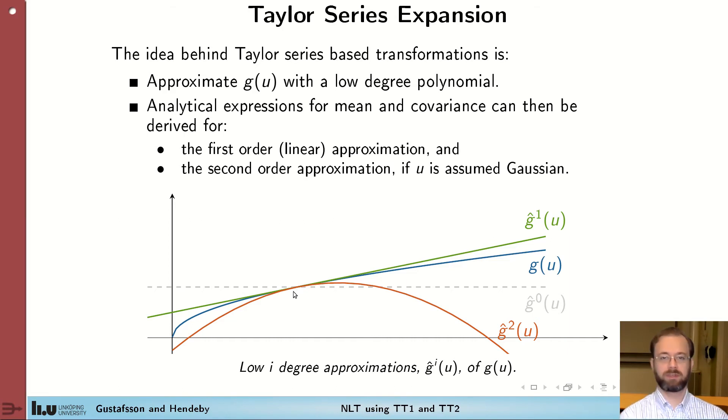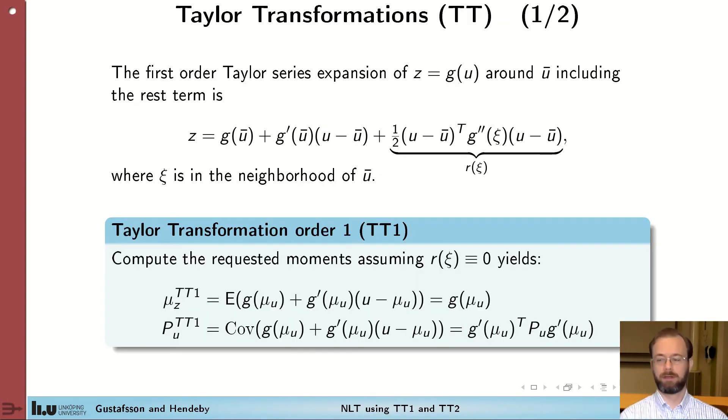And given a linear or quadratic function, we can actually compute the mean and covariance analytically, as we will see next. The Taylor series expansion of g in the point u bar is given by this expression here, with a constant term, a linear term and a quadratic term.